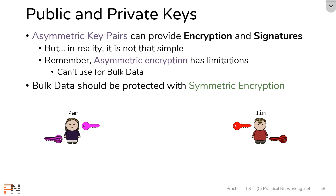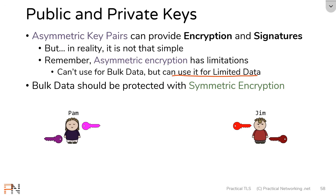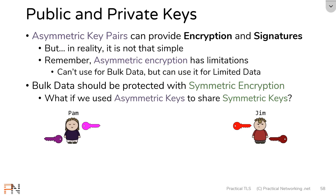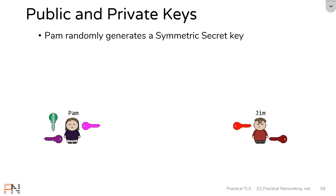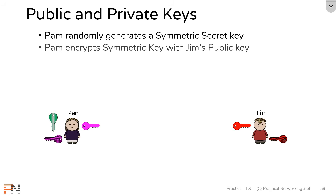Instead, if we want to protect bulk data we should use symmetric encryption. But symmetric encryption has the problem that we must first establish a symmetric key on either side of the wire in a secure way. A symmetric key is a pretty small piece of data, and we can use asymmetric encryption for smaller, limited data sets. So why not use an asymmetric key pair to share a symmetric key? That is what SSL and TLS actually do. Pam randomly generates a symmetric secret key, then takes Jim's public key and encrypts that symmetric key. The only key that can decrypt it is Jim's private key, so Pam is safe to send it across the wire.